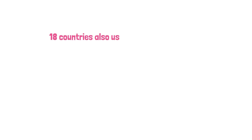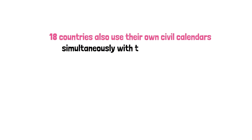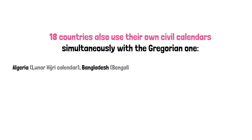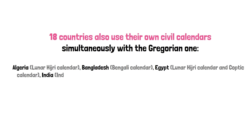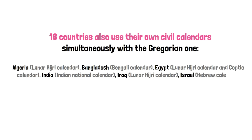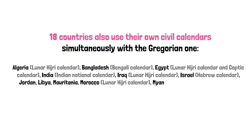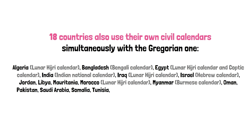Some countries — 18 to be precise — also use their own civil calendars simultaneously with the Gregorian one: Algeria, Bangladesh, Egypt, India, Iraq, Israel, Jordan, Libya and Mauritania, Morocco, Myanmar, Oman, Pakistan, Saudi Arabia, Somalia, Tunisia, the United Arab Emirates, and Yemen. We can't go into all of them, so let's look at two to understand some of the differences.